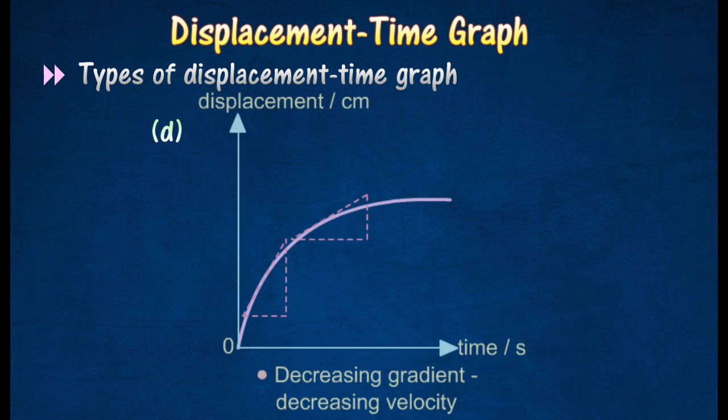Graph D shows that the object undergoes deceleration. Since the velocity is decreasing, the acceleration is negative.